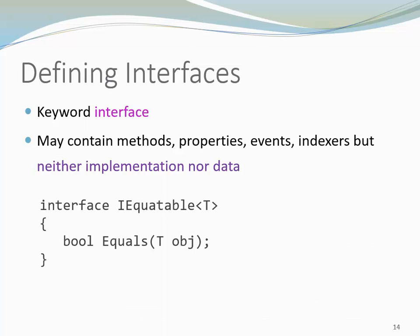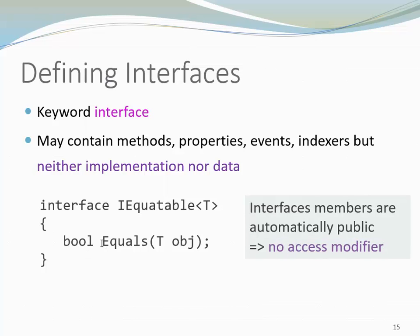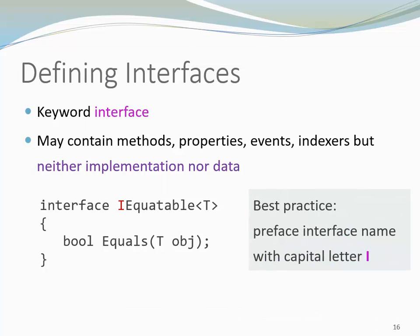Here is an example of the interface iEquatable. It has one single method, and the method is Equals. Notice that we don't use an access modifier — interface members are automatically public. Using an access modifier would not only be superfluous, it is not permitted, so we don't do it. Notice the uppercase I in front of Equatable. In C#, interface names should start with the prefix I. This identifies the type as an interface and helps make the code clear and easier to read.